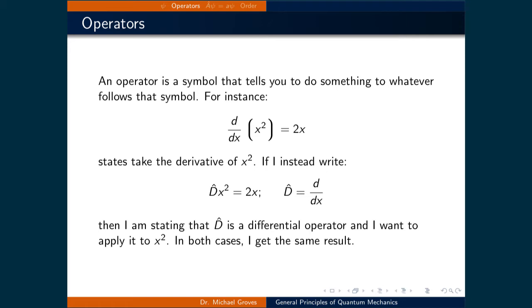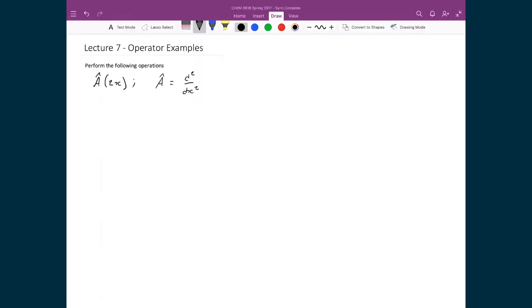Operators are typically denoted with a capital letter with a hat on top. Using this notation, we can define d hat as the differential operator, and we can write d hat times x squared instead. In both cases, we get the same result. So let's do a couple of examples in order to get more comfortable with using operators.